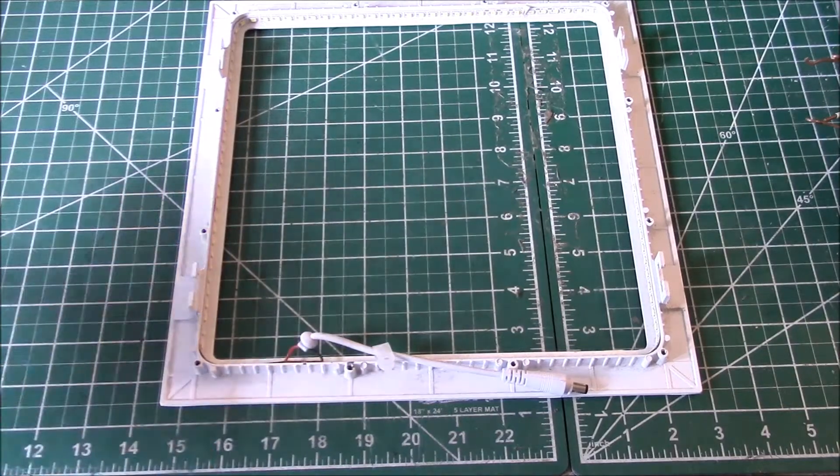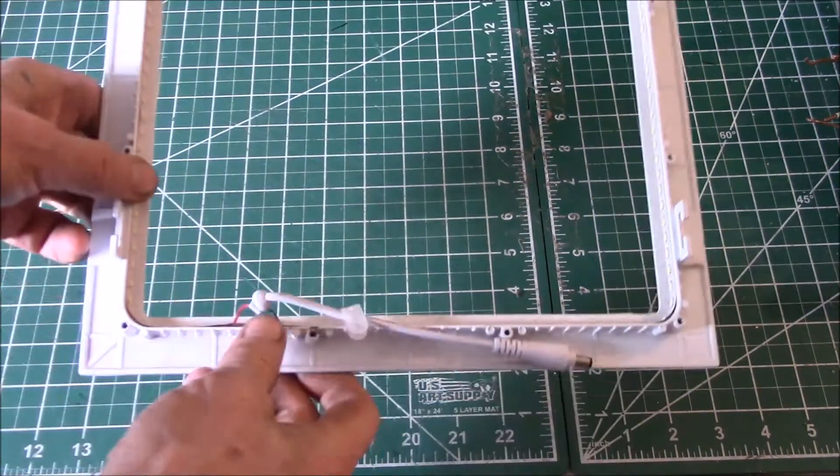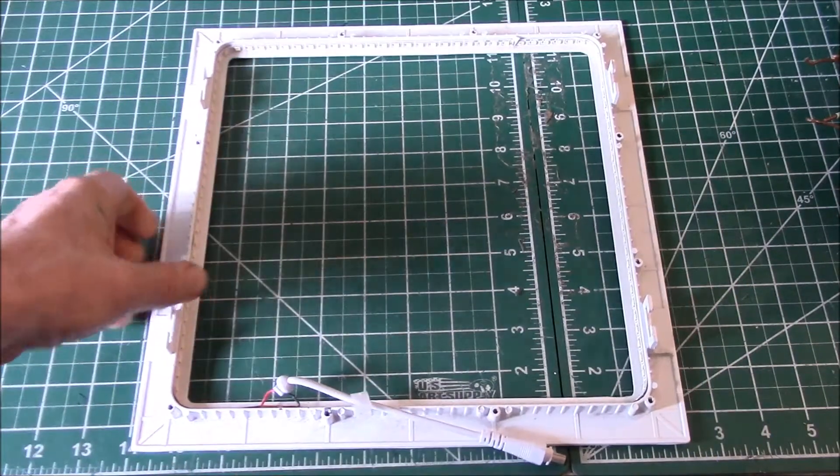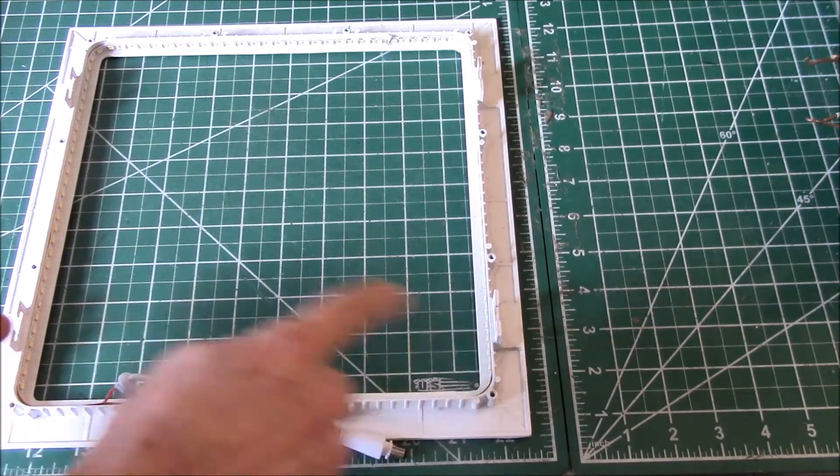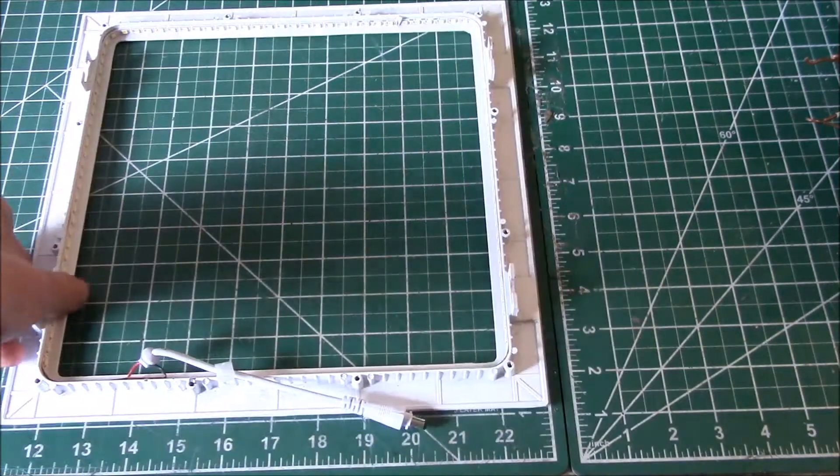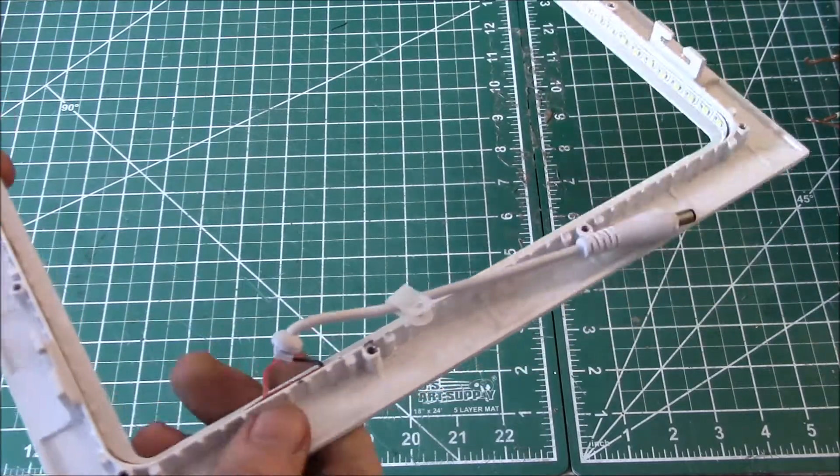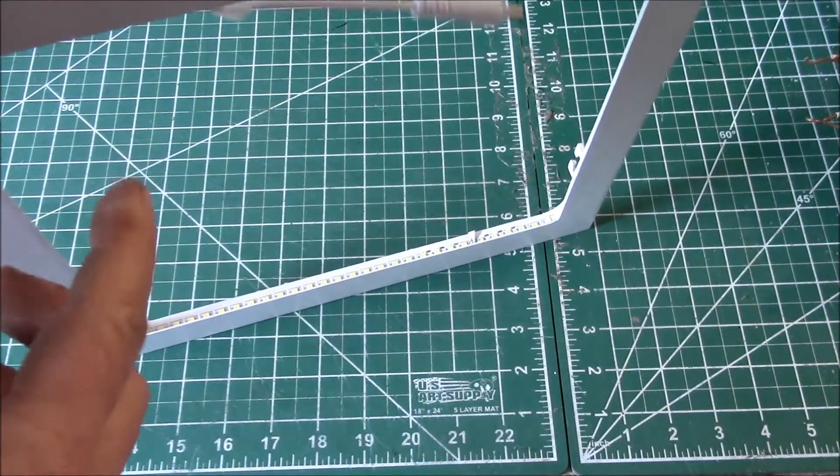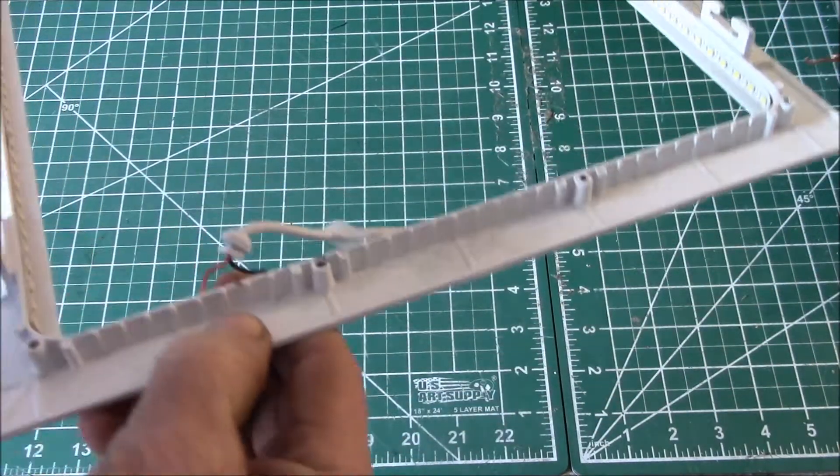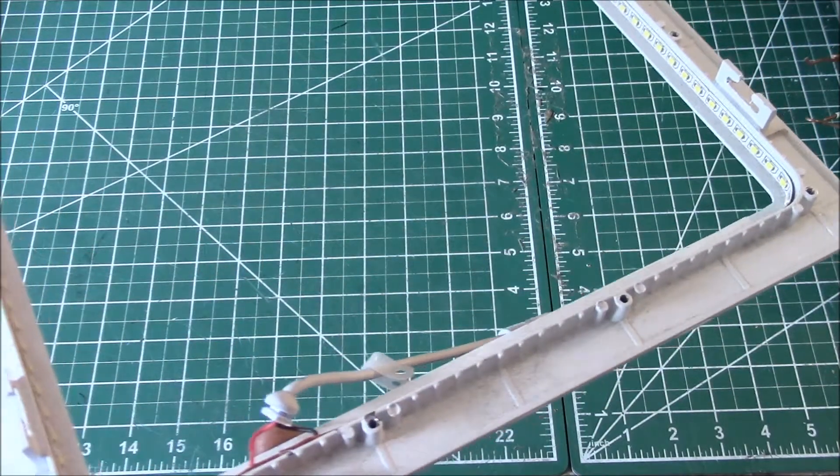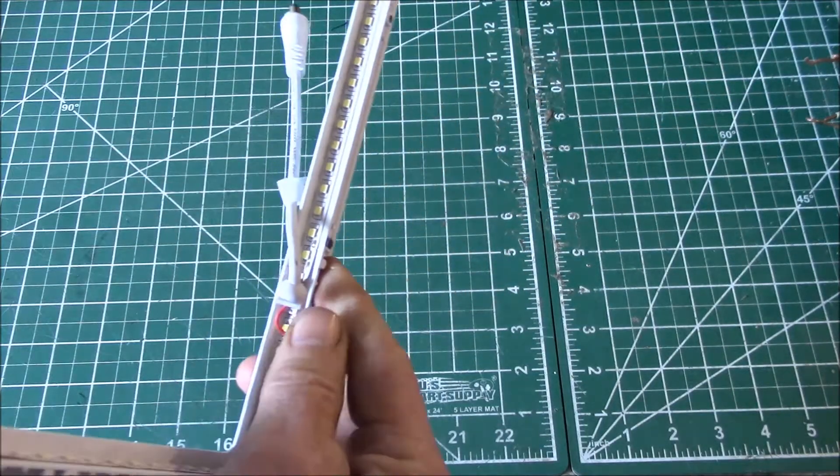I wanted to show you how these recessed ceiling lights are put together. This is one I bought about a year and a half ago. It's roughly 10 inches on the inside dimension of the square. The way they make these, this is a die cast metal frame. This is basically everything - this is your trim ring, this is the heat sink, and it's the mounting surface for the LEDs that go around the inside circumference.